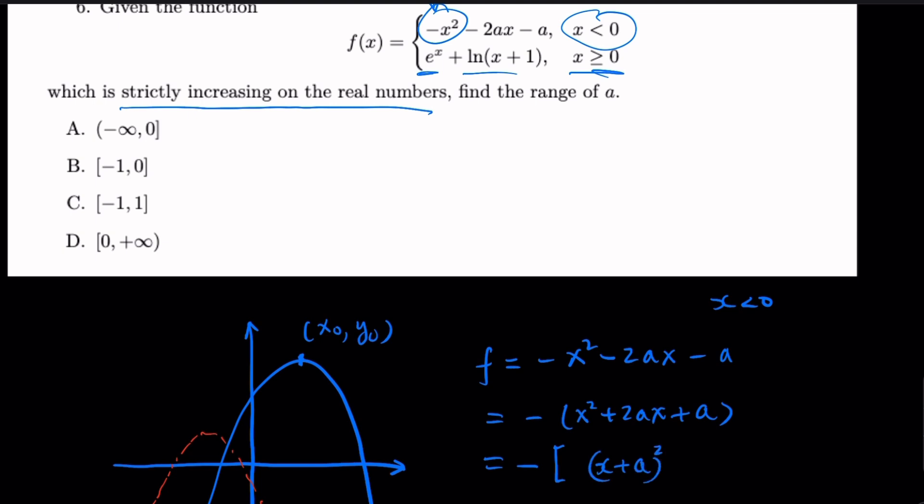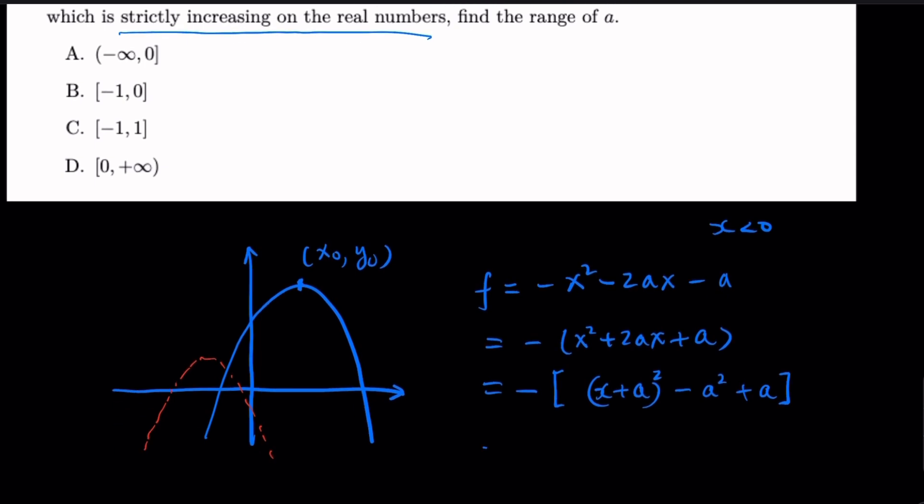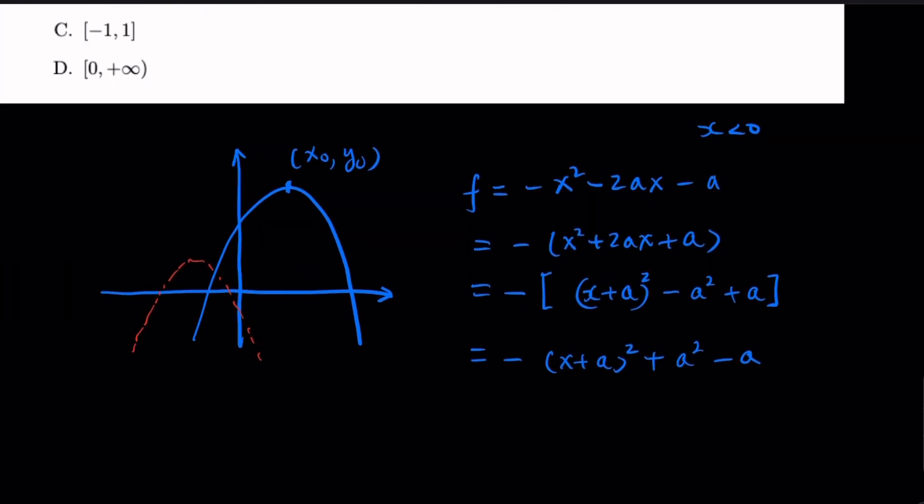You have extra terms. You can subtract a² and then plus a. So this whole thing is going to be -(x+a)² + a²-a. From here, we know the vertex x0 would be negative a when this term goes away. And the value of y would be a²-a. So x0 is -a, and y0 is a²-a.